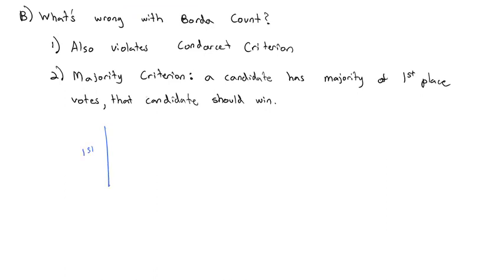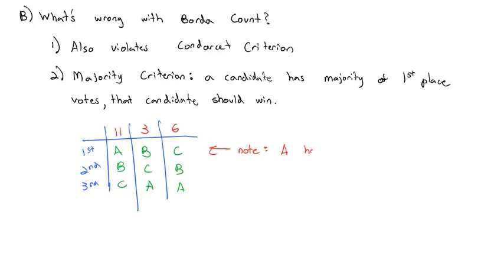For example, if I have three candidates and we're ranking them first, second, and third. And 11 people ranked them ABC, three people ranked them BCA, and six people ranked them CBA. What I want to note here is that A has 11 out of, if I add these up, 20 votes, 11 out of 20, or over 51% of the first place votes. A clearly won with a majority.